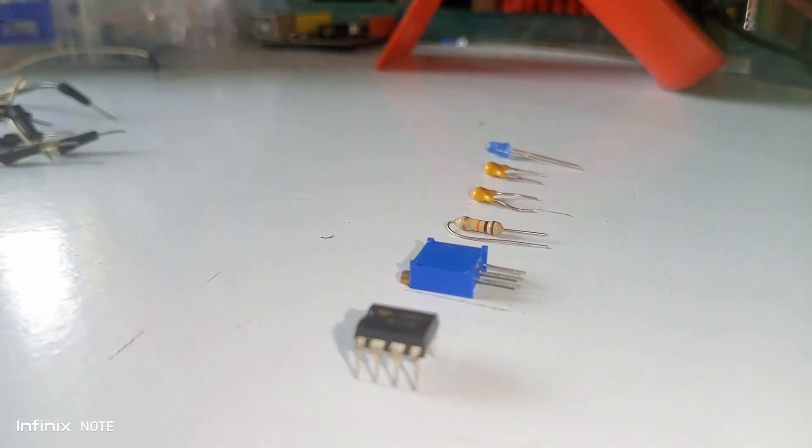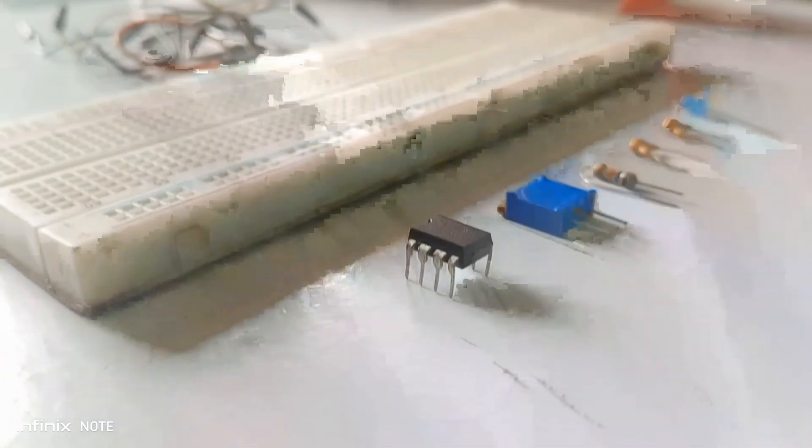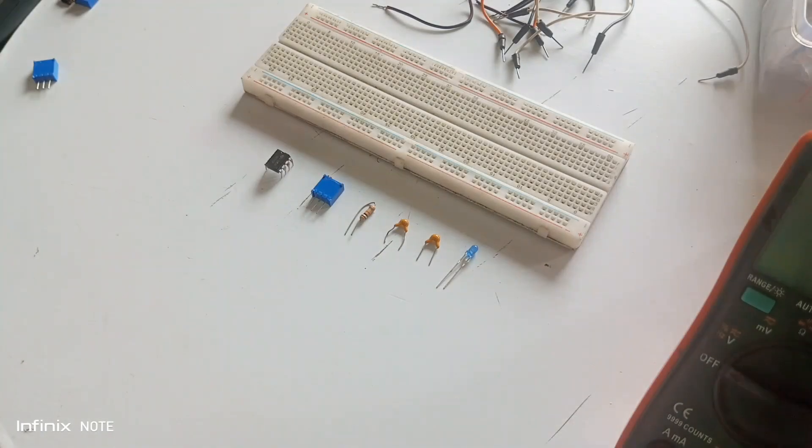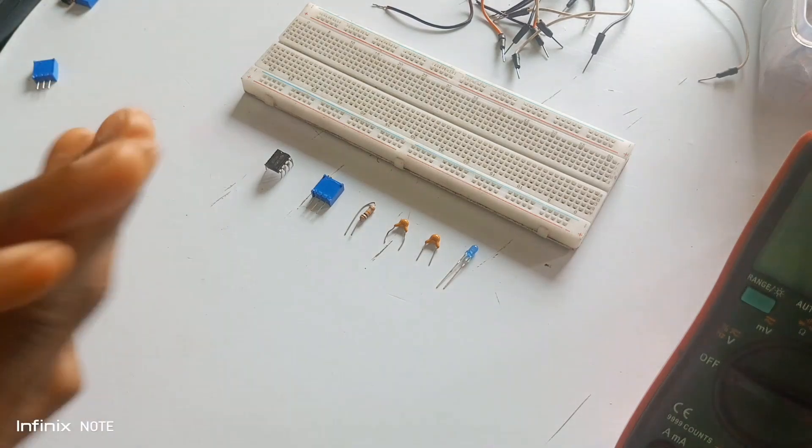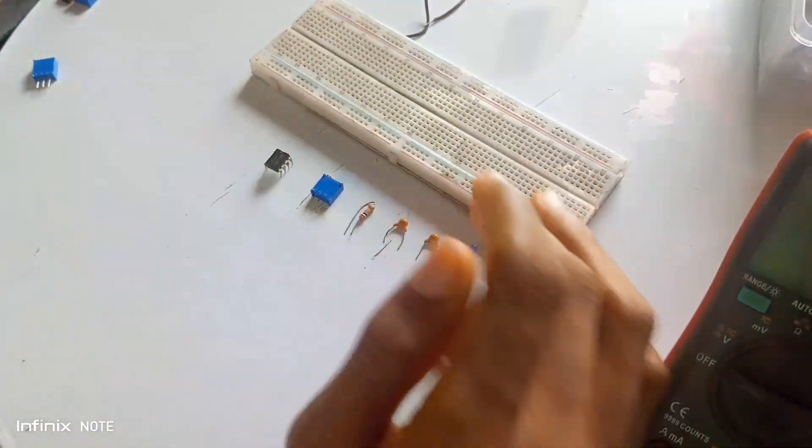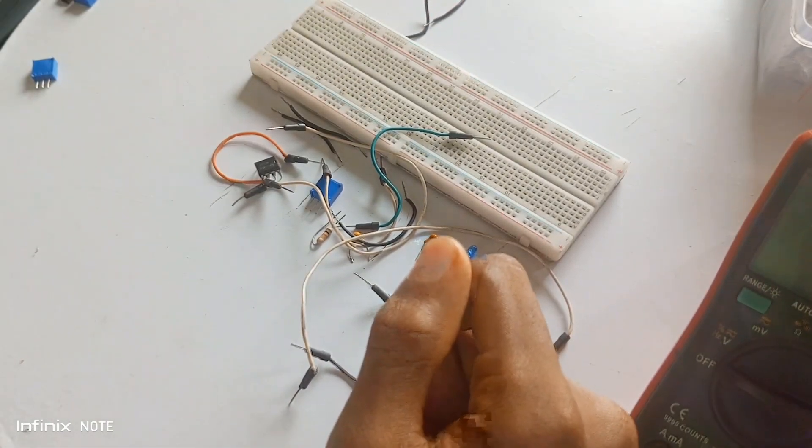To make the LED dimmer PWM signal generator, these are all the components you'll need. Without wasting much time, let's start the connection. As I said earlier, we're going to be using the components on a breadboard for connection and also a lot of jumper wires for multiple connections. Let's quickly make the connections.